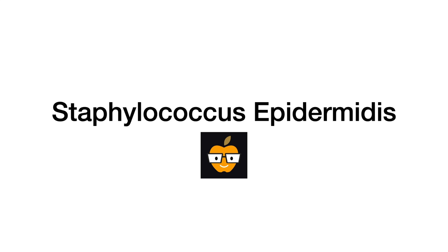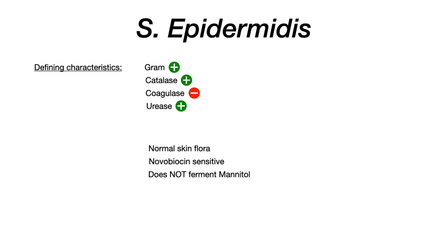In this video, we'll talk about Staphylococcus epidermidis. A brief overview of the defining characteristics tells us that Staph epidermidis is gram positive, catalase positive, coagulase negative, and urease positive.